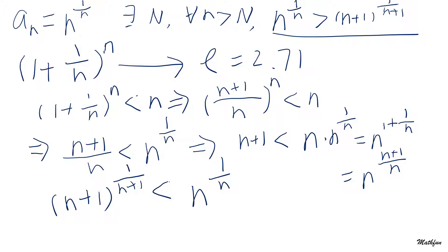At the same time, we know this sequence is bounded below, because the nth root of n is always greater than 1. So it has a lower bound. Since it is both decreasing and bounded below, by the monotone convergence theorem — which states that a monotone decreasing sequence bounded below must have a limit — this sequence has a limit.